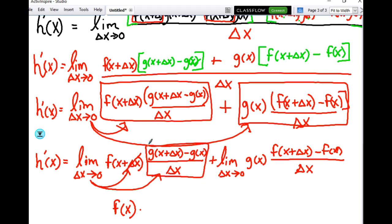g of x plus delta x minus g of x over delta x. In other words, the limit of this difference quotient as delta x approaches zero is the derivative of g. Crazy, huh?